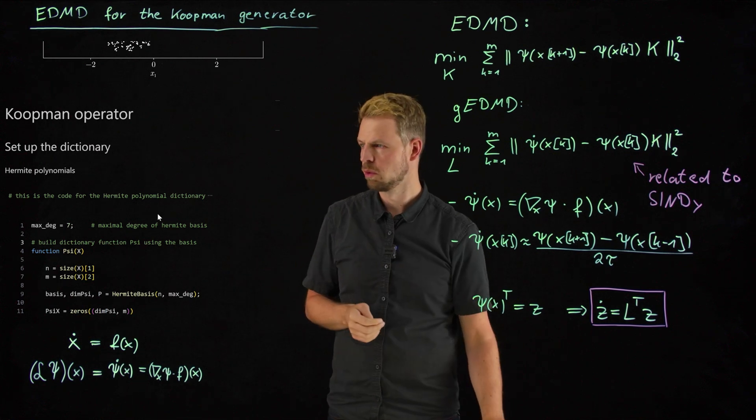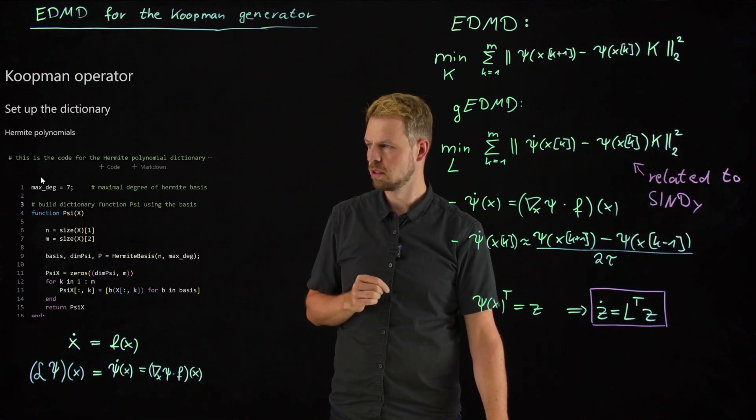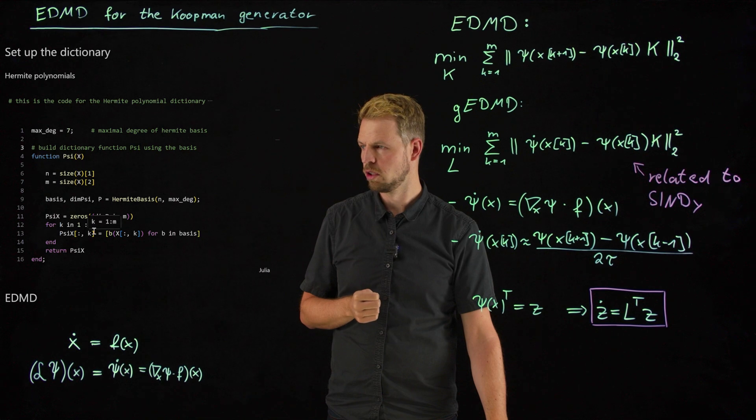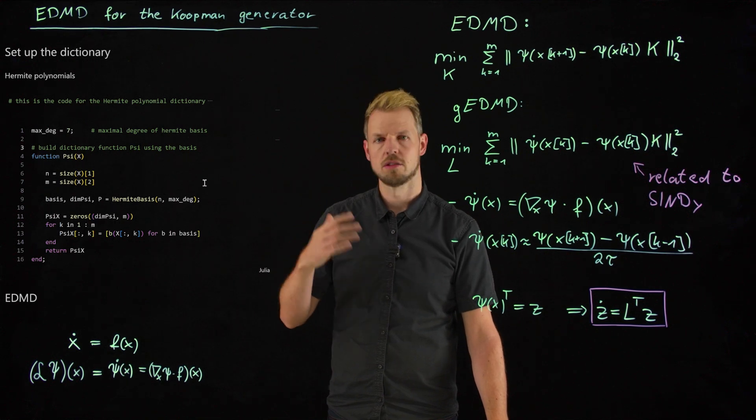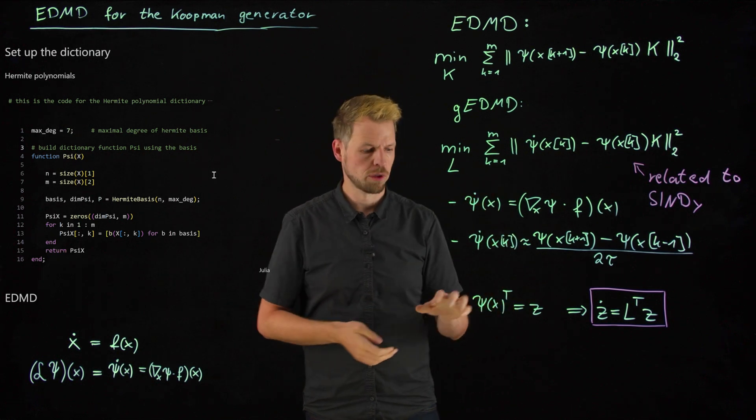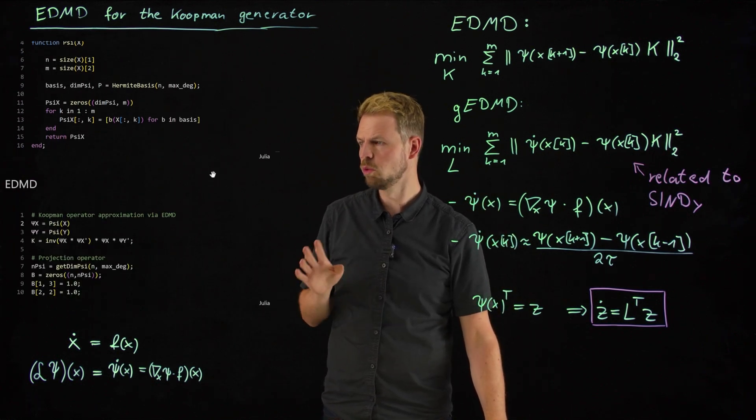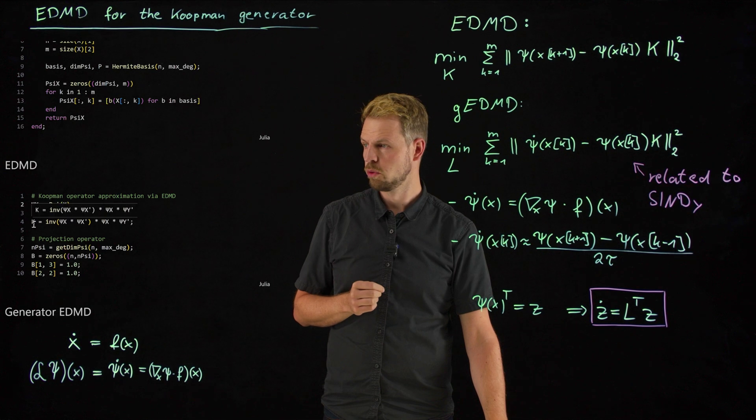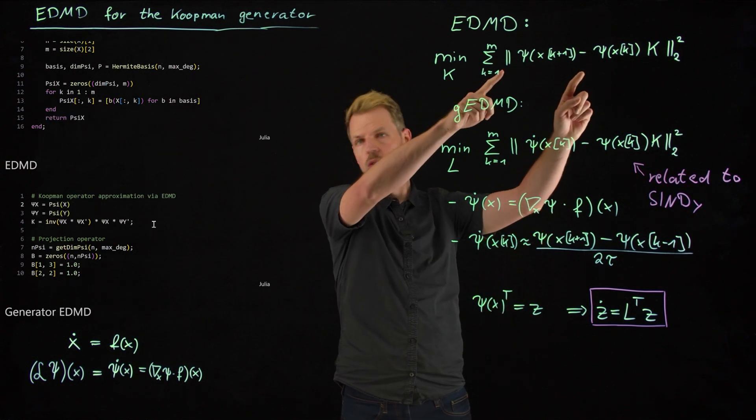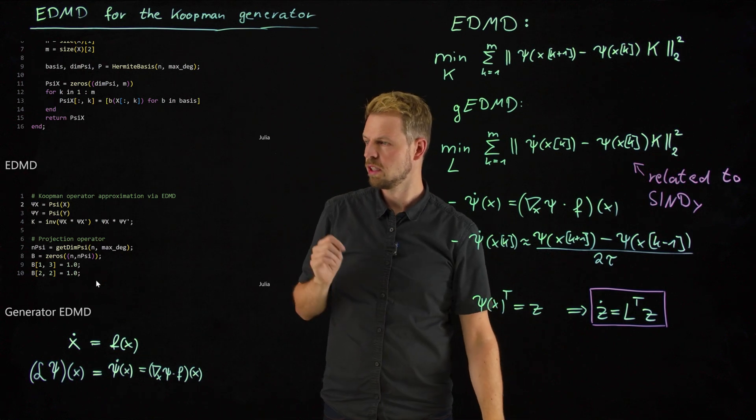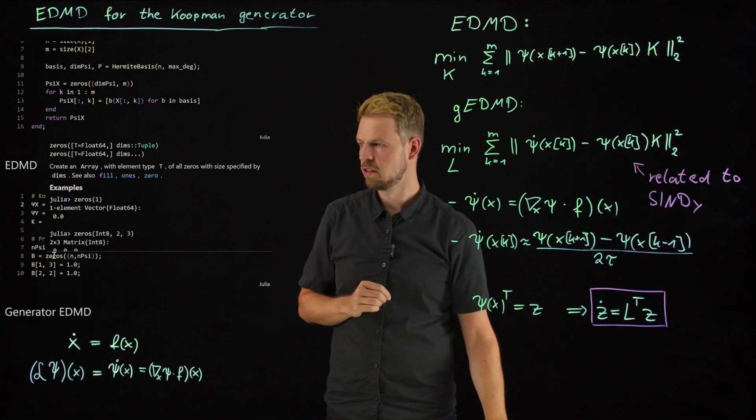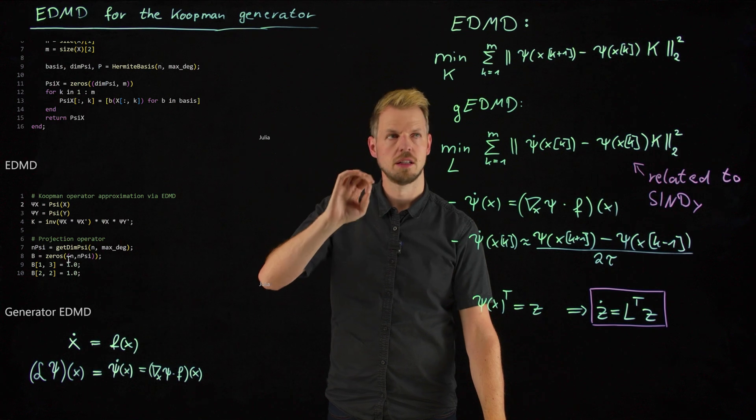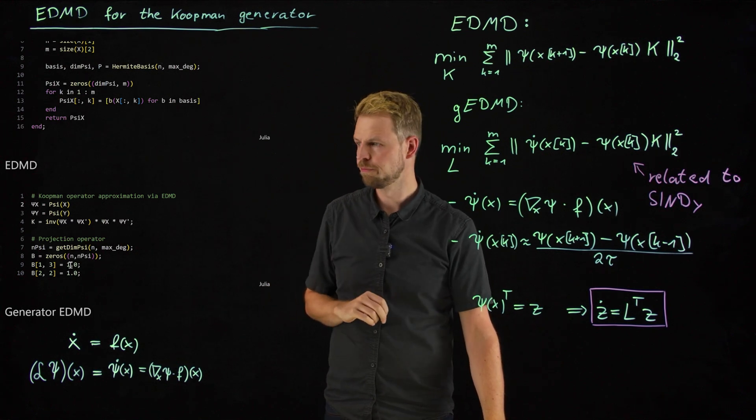And then we do everything that we have done before. We define a dictionary, some code is hidden here, and what matters is that we have these Hermite polynomials similar to before. So this psi function takes x and considers all the Hermite polynomials as the basis function, or the basis for our function space, the subspace of the observable space. And then we do EDMD, as we have done it all the time. We lift the x data, we lift the y data, we compute the K matrix, solving the simple regression problem. This is exactly the solution to this problem here. And then we need this B matrix that projects back onto the state. And so, since Hermite polynomials have constant functions inside, I can simply select the entries of psi that give me x1 and x2.